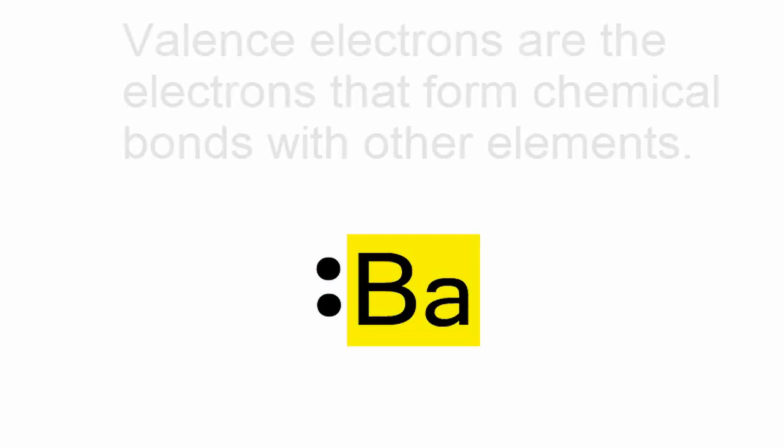Barium is in group 2 or 2A. That means that it has two valence electrons. We'll put those two valence electrons next to the element symbol Ba for barium.